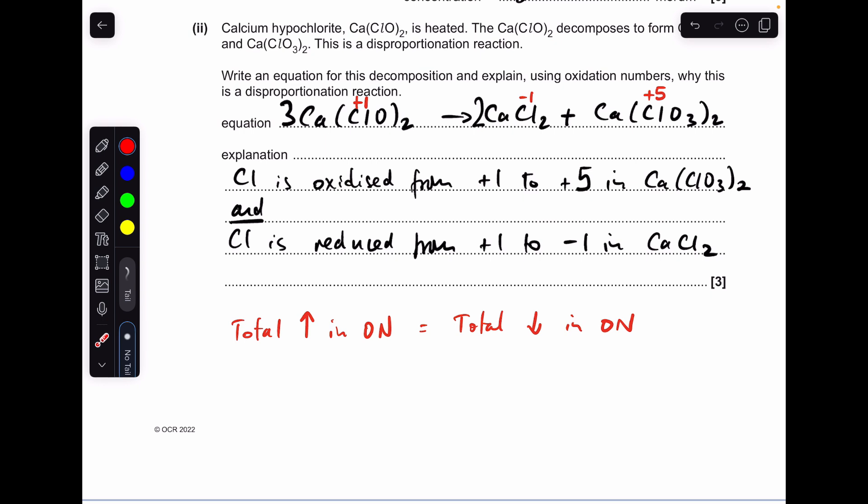For the explanation of why it's disproportionation, it's down to the fact that chlorine has been simultaneously oxidized and reduced in the equation. Chlorine is oxidized from plus 1 to plus 5 in the Ca(ClO3)2 but it's also reduced from plus 1 at the start to minus 1 in the CaCl2.